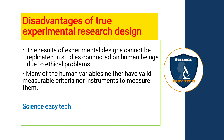Many human variables neither have valid measurable criteria nor instruments to measure them. Human characteristics may not have standard scales to measure them, and each individual is different and unique. Variables cannot be measured with certainty since they may vary from individual to individual, and there are no particular instruments which can correctly measure these variables — this is also a drawback for experimental research design.